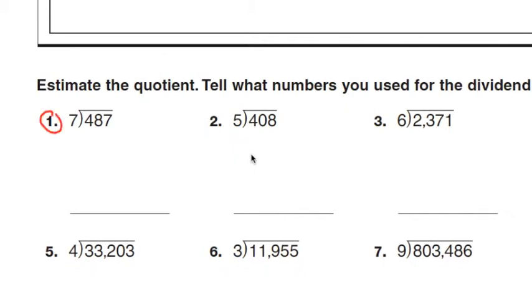Looking at problem number 1, I look at the divisor, 7, and the dividend, 487. What I'm going to do is look at the first two digits in 487 and ask myself,